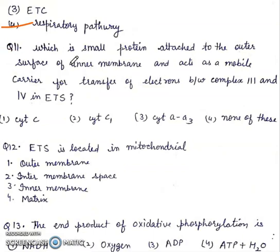Question 11: Which is small protein attached to the surface of inner membrane and acts as a mobile carrier for transfer of electrons between complex 3 and 4 in ETS? Cytochrome C, cytochrome C1, cytochrome AA3, or none of these? Right answer will be first, cytochrome C.